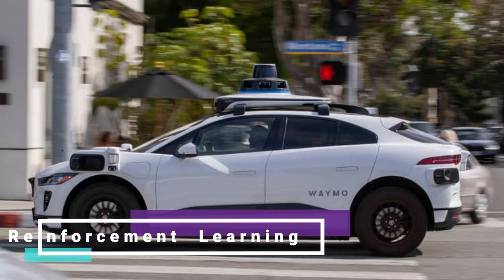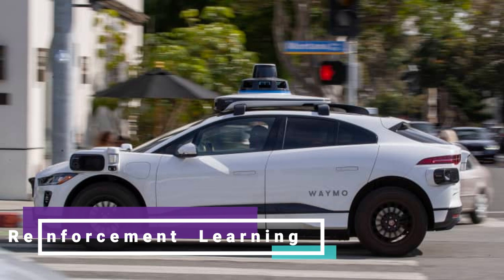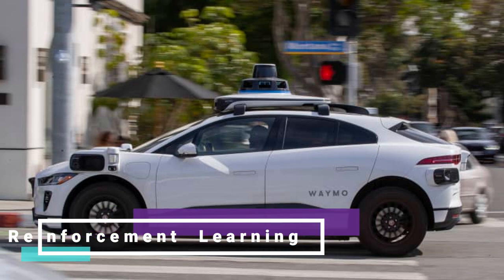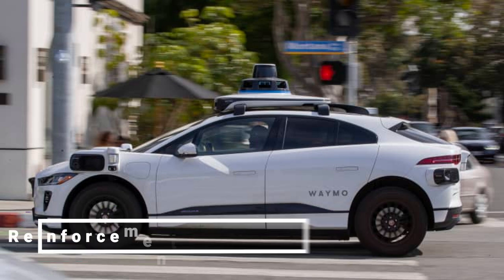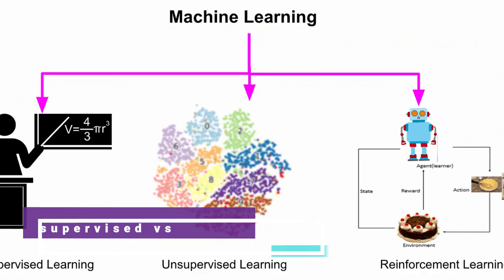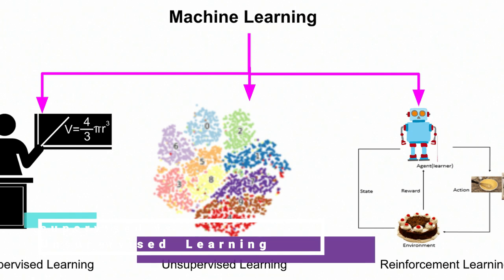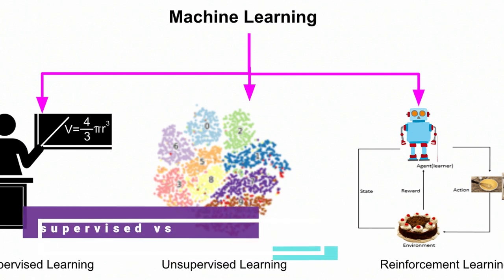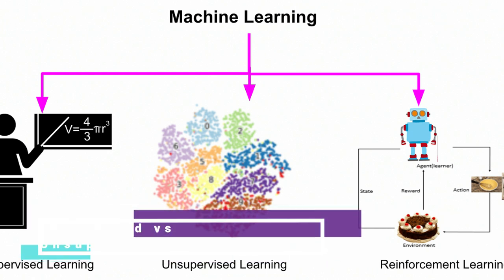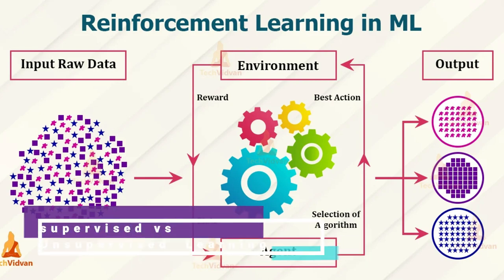We have Supervised versus Unsupervised Learning. When it comes to machine learning, there are two main flavors. In supervised learning, the model is trained on labeled data, making predictions or classifications. In unsupervised learning, on the other hand, the model works with unlabeled data, finding patterns or grouping similar data points together.